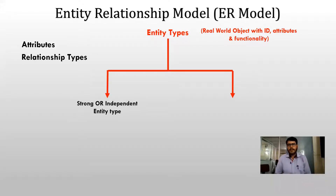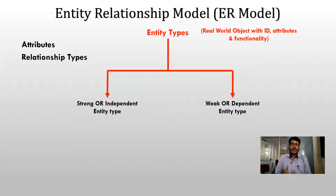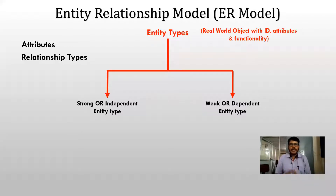In entity types, we have two types: strong entity, also called independent entity, and weak entity, also called dependent entity. There are two types in entity types — strong entity and weak entity, which are also called independent entity and dependent entity.